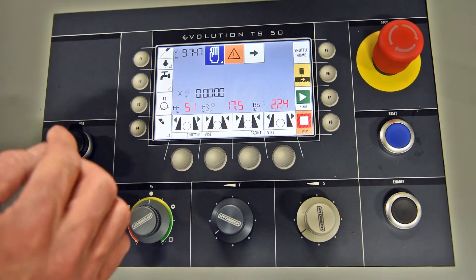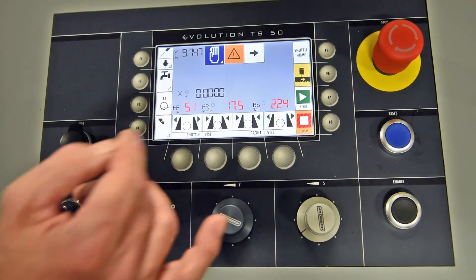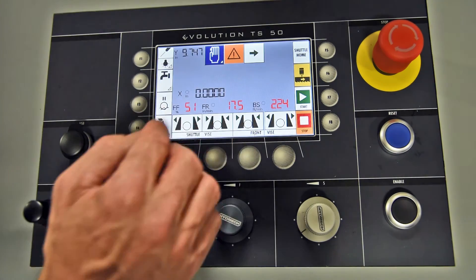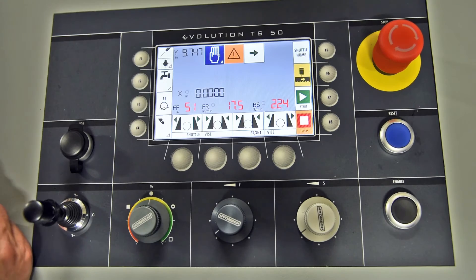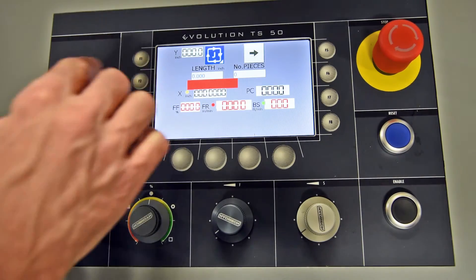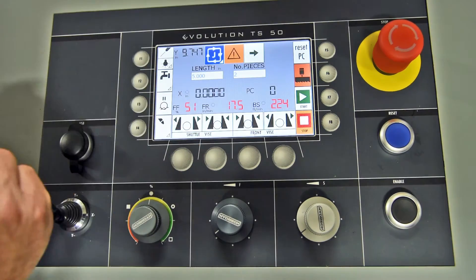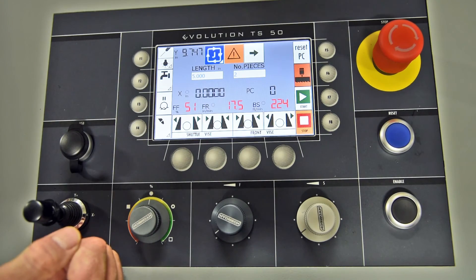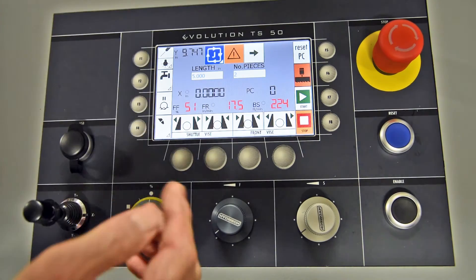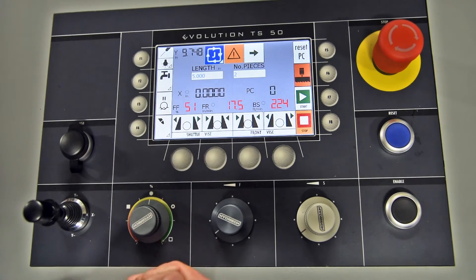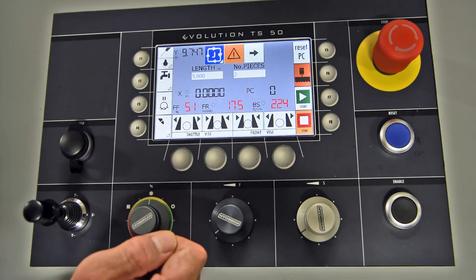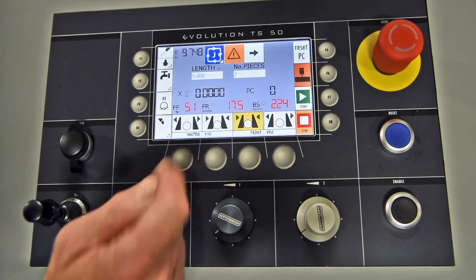We're now going to switch into semi-automatic. What we showed previous was just a manual mode, one cut situation. So to switch into your auto cycle, you would push this. Now you have a square box with arrows on it with the letter J. So in order to set my job up, I would bring my material in. I would close my front vise. I would close my shuttle vise.